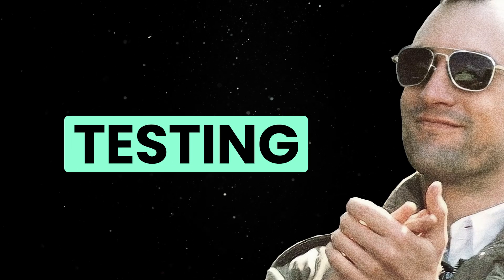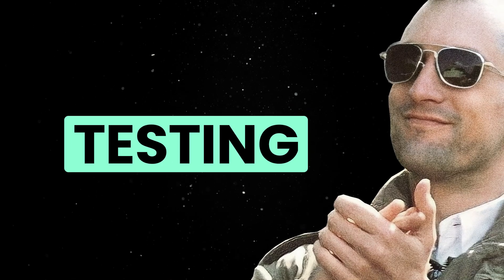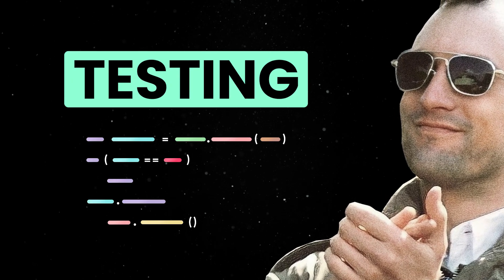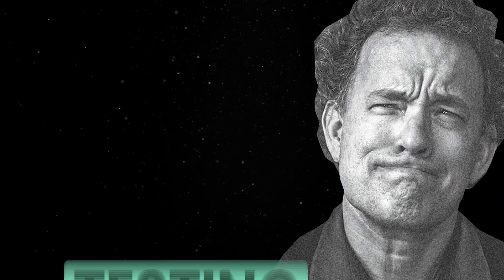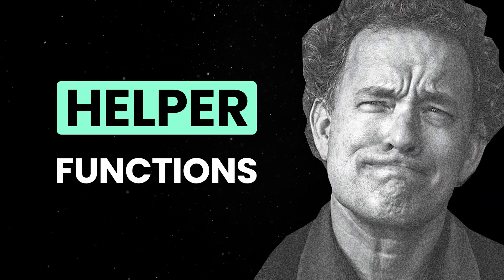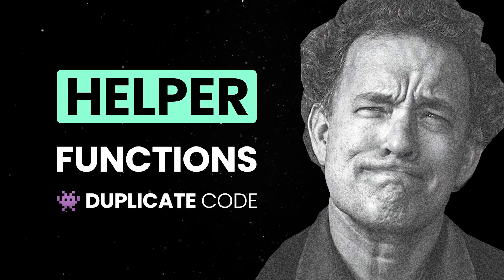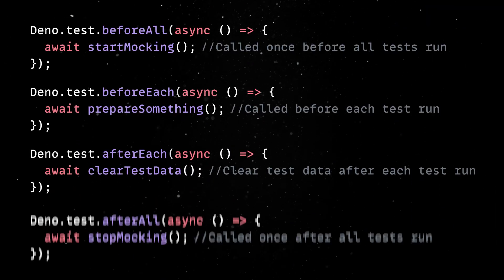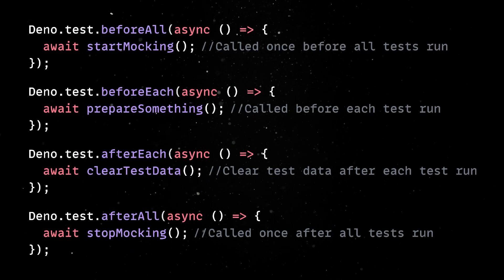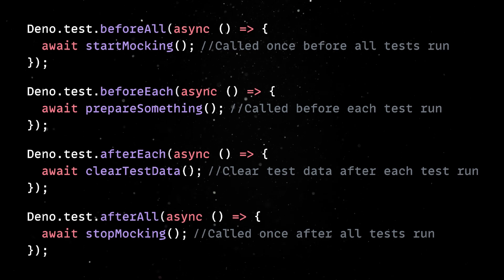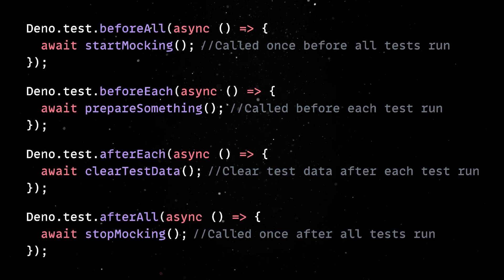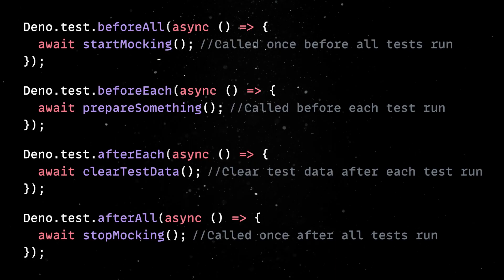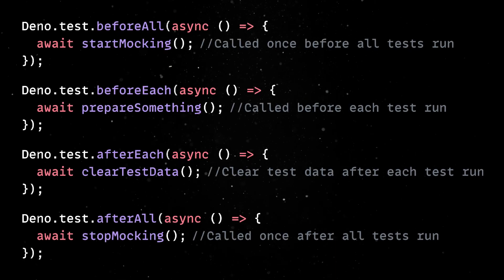Testing also got a nice upgrade. Writing tests usually requires some kind of repetitive setup and teardown, especially in larger projects. Until now, you either wrote helper functions and hoped people remembered to call them, or you just duplicated the code across test files. But with Dino 2.5, you get built-in setup and teardown APIs out of the box. This means you can start a mock server once before all tests, reset data before each one, and clean up at the end without reinventing the wheel.